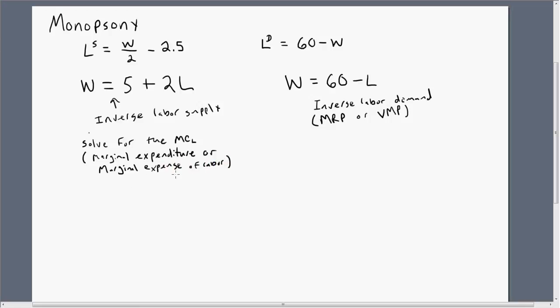So how do we get the marginal cost of labor, or marginal expenditure, or whatever you want to call it? We're going to get that from the firm's variable cost equation. The firm's variable cost, VC, or total variable cost, is nothing more than the wage times the units of labor, W times L. We're going to substitute this 5 plus 2L in for W in the variable cost equation.